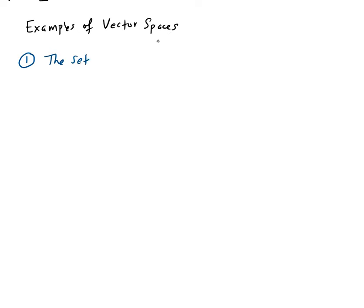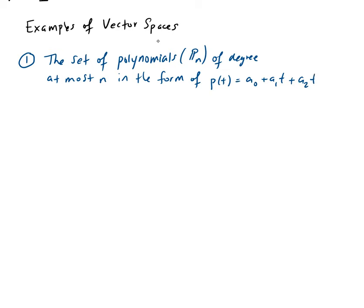First example is the set of polynomials. The set of polynomials, we denote this by P subscript n, of degree at most n, in the form of p(t) equals a_0 + a_1*t + a_2*t^2 + ... + a_n*t^n. Remember, a_0, a_1, a_2, a_n, those are your coefficient values. Any polynomial, any set of polynomials is a vector space. I'm going to prove this on the next part.